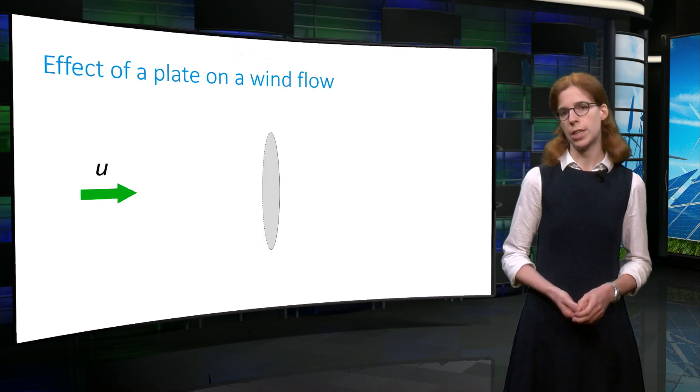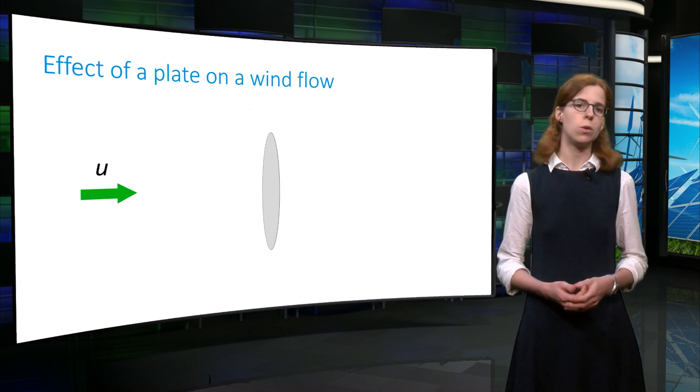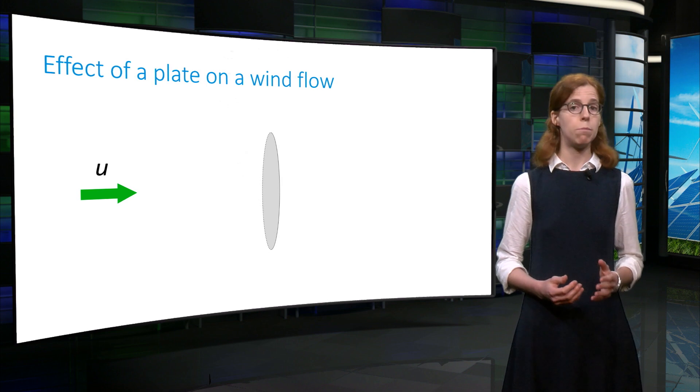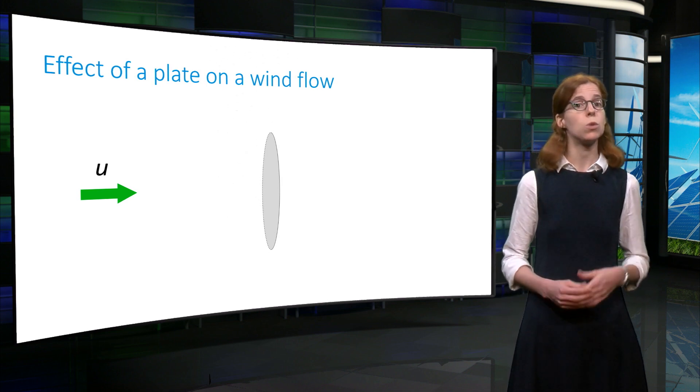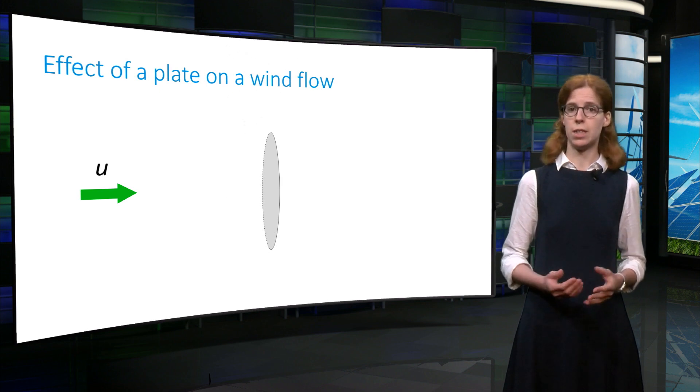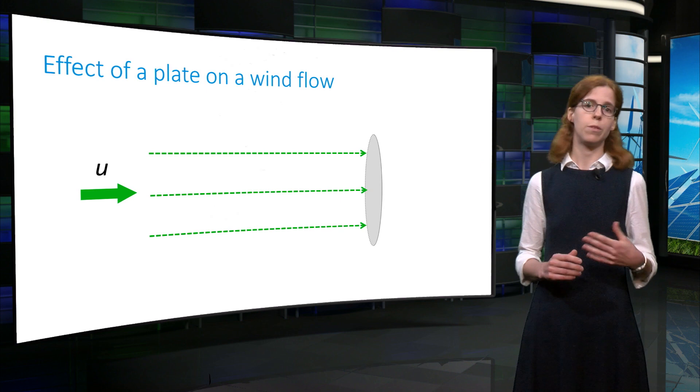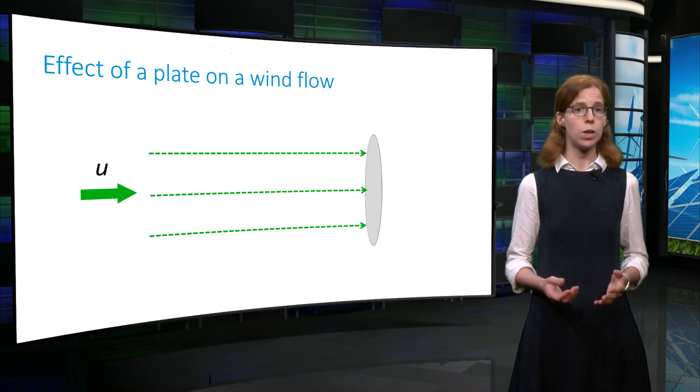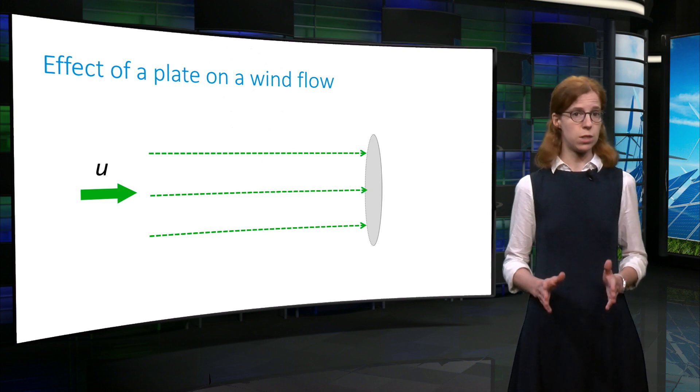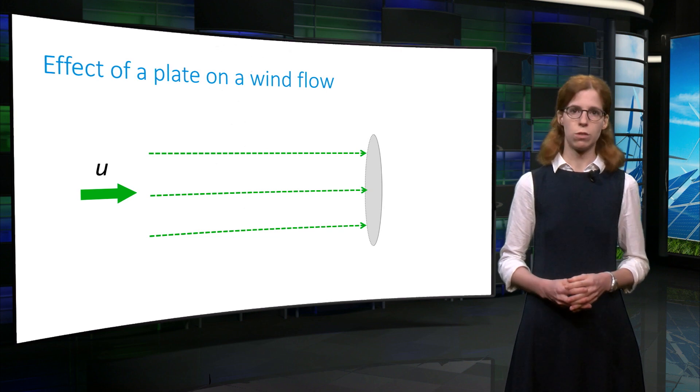In order to understand the process of wind energy conversion, it is useful to represent the wind turbine rotor in a simple way, as a disk. So what happens to the flow in the presence of this disk? Well, if the disk is free to move with the wind, it does not exert any force on the flow, and therefore the wind is completely undisturbed. In this case, no energy is extracted from the wind.